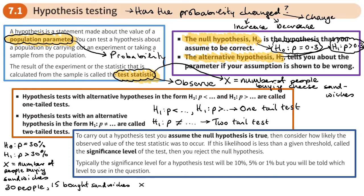This is where we use the binomial distribution. Our sample size is 30, our probability is 0.3. I want to work out: what's the probability that 15 or more people would buy my sandwiches, with a sample of 30 and probability 0.3? I'm testing H0 — how likely is this to happen if the probability is 0.3 and I pick 30 people and 15 or more buy the sandwiches? We're going to work this out on a calculator.